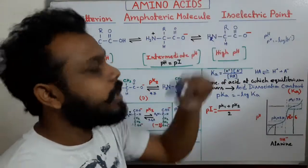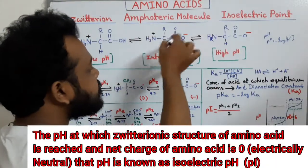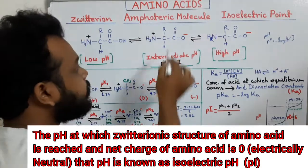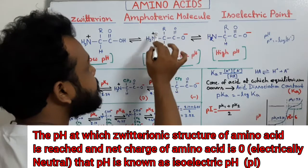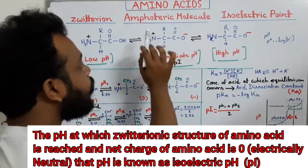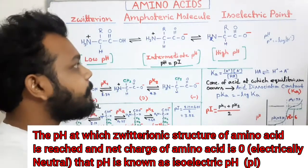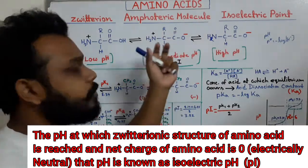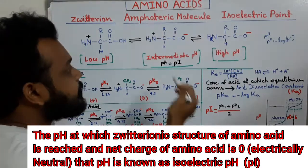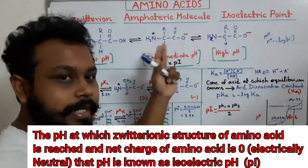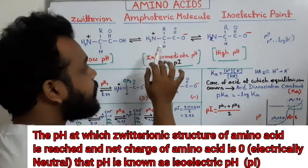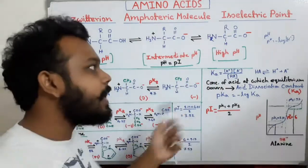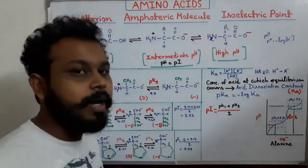Next is the isoelectric point. The zwitterionic structure has a net charge of zero — it is electrically neutral. The pH at which we get this electrically neutral zwitterionic structure is known as the isoelectric point, or isoelectric pH.